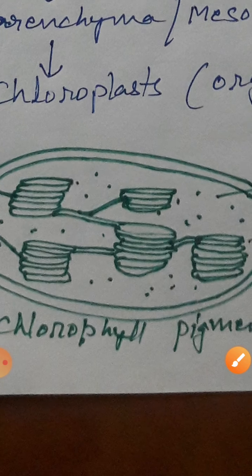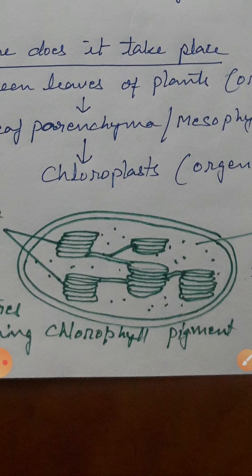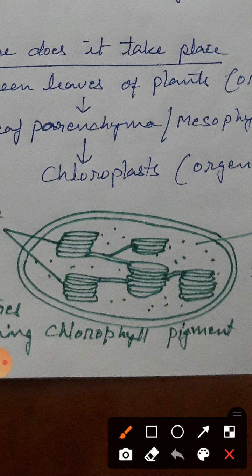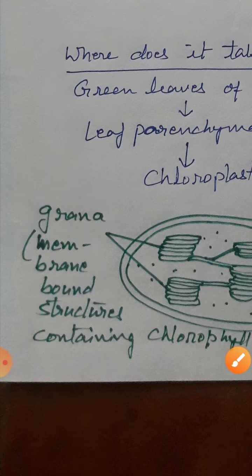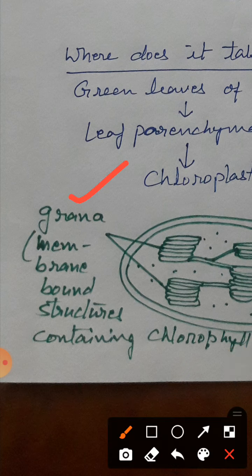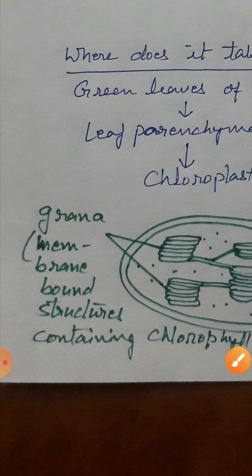Let's have a look at the structure of chloroplasts. Chloroplast mein double membrane hai — outer and inner membrane. Iske alawa yahaan fluid hai jisme variety of enzymes hoti hain. Aap dekh sakte ho ki membrane-bound coin-like structures hain, jo ek ke upar ek arranged hain. To yeh jo pura stack hai, pura group hai, usko kehte hain grana. Grana are membrane-bound structures containing chlorophyll pigment — green pigment — isi ke andar hoti hai, aur yahi wajah hai ki chloroplast ka color green hota hai.